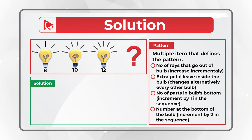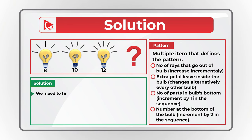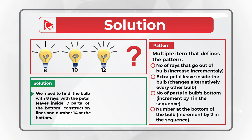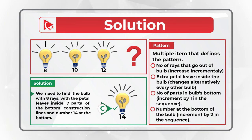Based on this information, we need to find the bulb with eight rays, with the petal leaf inside, seven parts of the bottom construction lines, as well as the number 14 at the bottom. The correct choice that matches all of these conditions is choice C. Hopefully you've nailed this question and now know how to answer similar problems on the test.